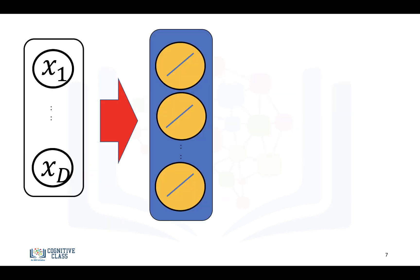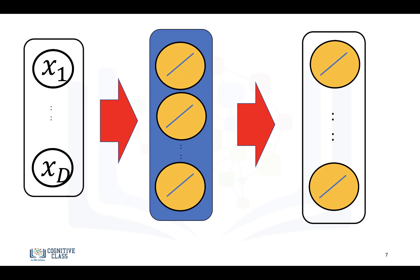We take our input, pass it to the hidden layer, and then pass it to the output layer with multiple outputs. Then we apply the same methodology we used for the softmax function.